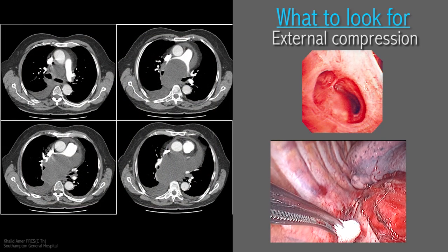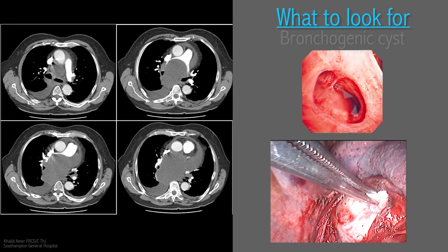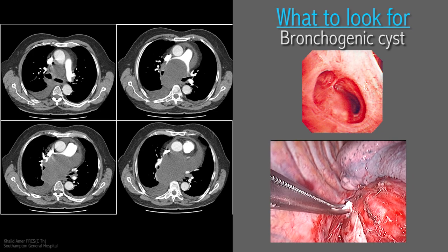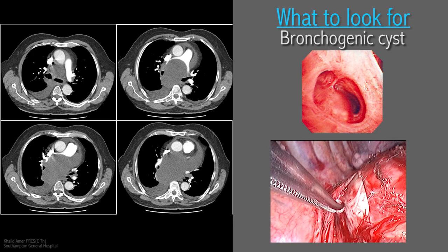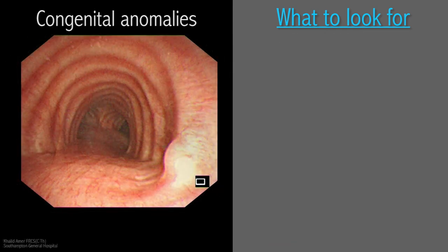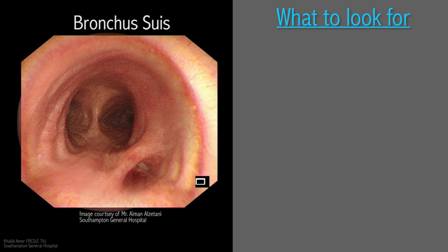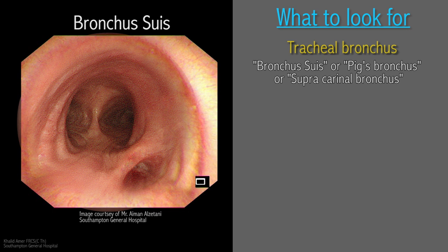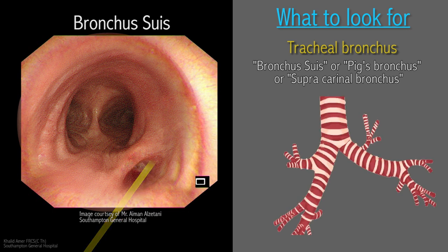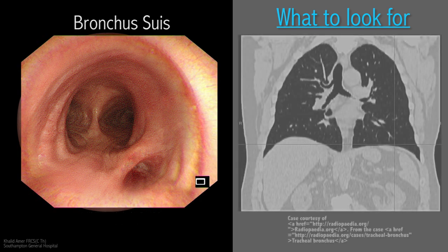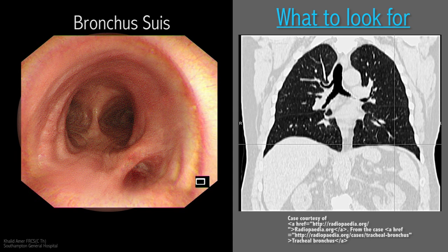Before leaving the area of the carina, here is an example of external compression. The subtle asymmetrical rise in the membranous part at the take-off of the right main bronchus is abnormal, and it transpired to be caused by a bronchogenic cyst expanding the subcarinal space. As the scope is advanced towards the primary carina, one should be aware of a very rare congenital abnormality — the bronchus suis, also known as the pig's bronchus or supracarinal/tracheal bronchus — where the right upper lobe bronchus or one of its segmental bronchi takes origin directly from the main stem trachea. This anomaly causes difficulty in isolating and ventilating the right upper lobe with a double lumen tube, which can be a nuisance in video-assisted surgery.